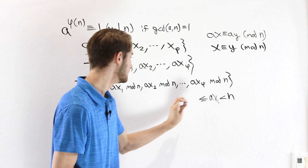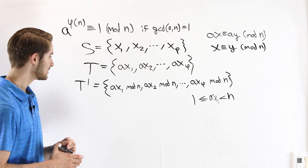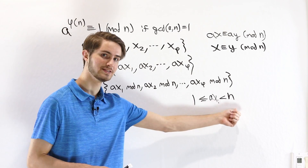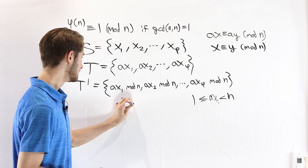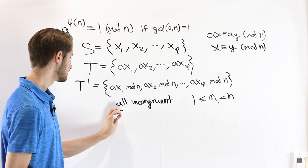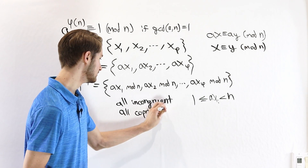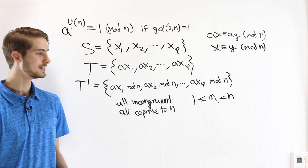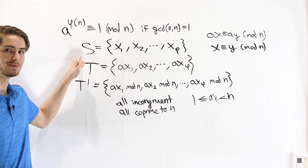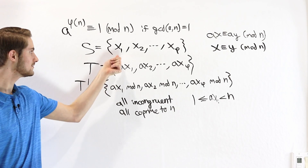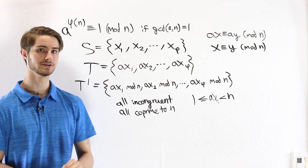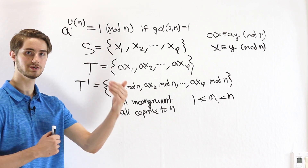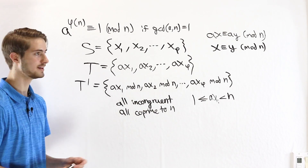Let's think about the properties of T'. We have a set of numbers between 1 and n, they are all incongruent mod n, and they are all coprime to n. These conditions should seem familiar — they're very similar to the conditions on our original set S. The original numbers x₁, x₂, up to x_φ were numbers between 1 and n, all incongruent, and all coprime to n. That's how we defined the set.